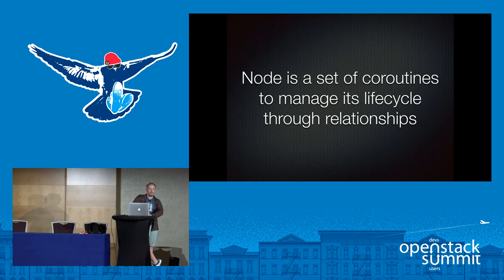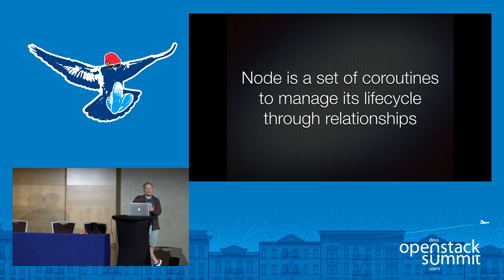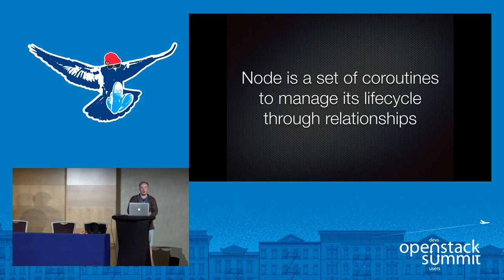In iOrchestra, each node is a set of coroutines defining its lifecycle events. Each node has at least four lifecycle events, but iOrchestra doesn't force you to have all of them — you only need two: create and delete. Tosca spec defines two more: create, start, stop, configure, and delete. But for some cases you don't need configure or stop. For example, if you have an authorization node, stopping authorization doesn't really make sense for that type of node.